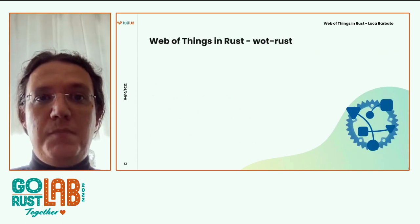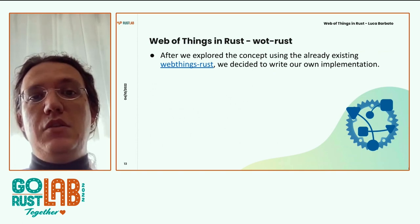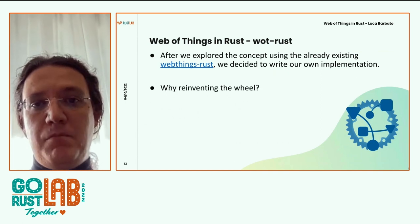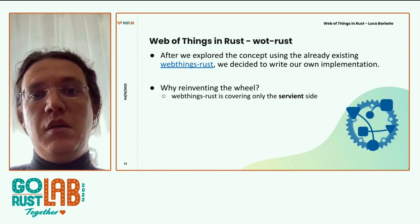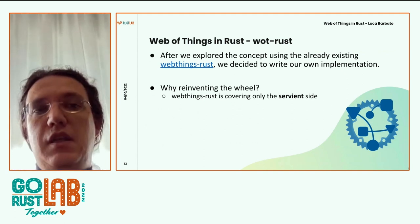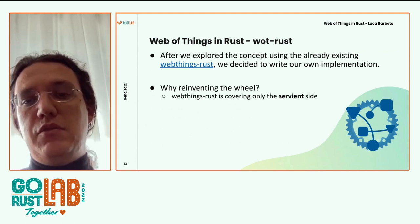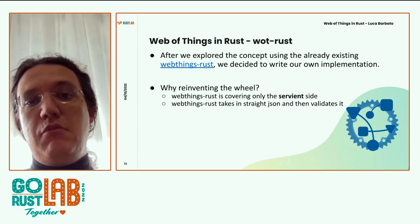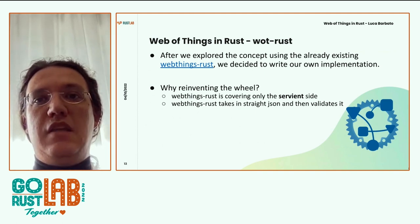We liked the concept. We were lucky since Web Things already had an implementation in Rust. We did all the experimenting and then decided to write our own. Why? Sometimes the wheel is not complete — this is that case. The web-things-rust crate was covering only the serving part, the part that exposes things, but not the part that consumes them. Also, web-things-rust just takes in straight JSON, validates it, and serves it, so it's not doing as much as it could to leverage the language.